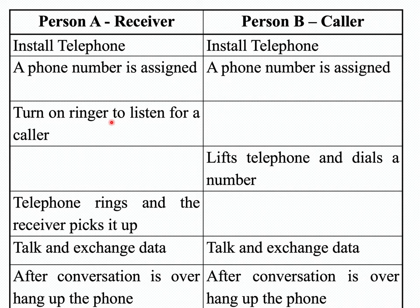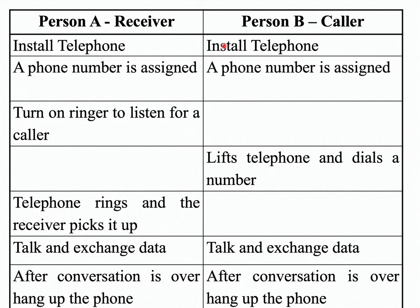Consider a scenario where person A is the receiver and person B is the caller. Person B wants to send information to person A, and both are communicating with each other. To do this they need a medium — in this example we use a telephone. If person B wants to call person A, both need to have a telephone installed.